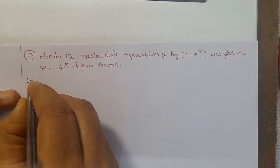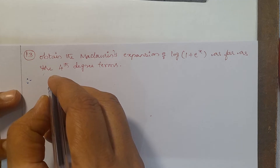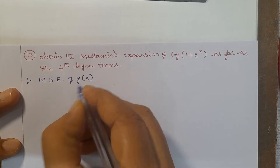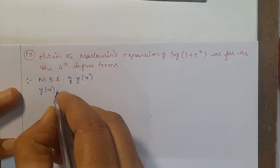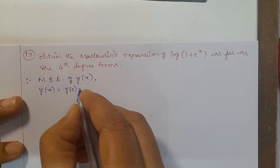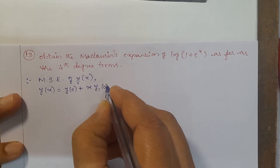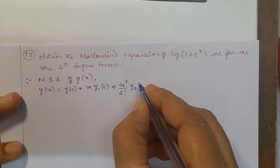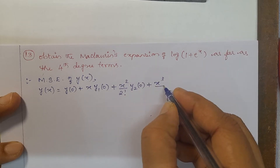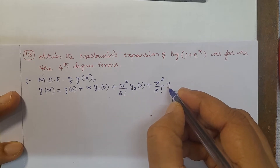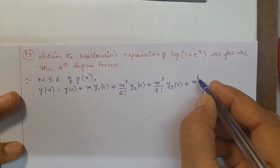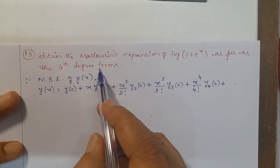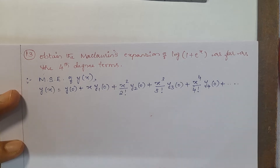First we should write the Maclaurin's Series Expansion of y(x). Maclaurin's Series Expansion of y(x) is given by: y(x) = y(0) + x·y₁(0) + (x²/2!)·y₂(0) + (x³/3!)·y₃(0) + (x⁴/4!)·y₄(0) + ... up to 4th degree terms.